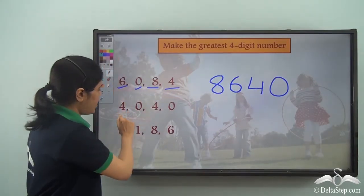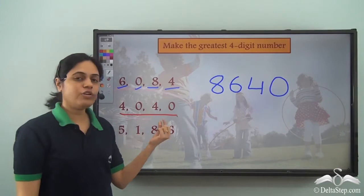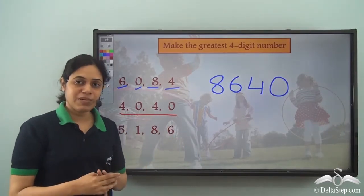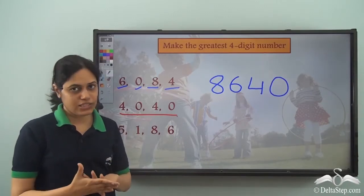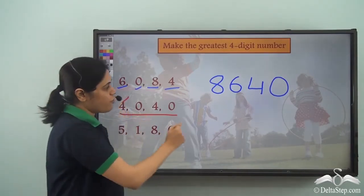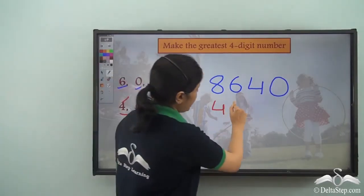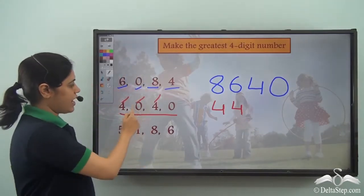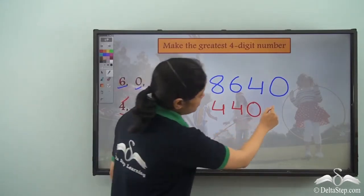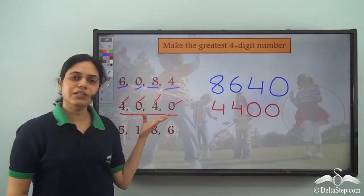Next, using digits 4, 0, 4, 0 — here 4 is written twice and 0 is written twice. Between 4 and 0, 4 is larger, so we write 4 first, then another 4, then 0, then 0. So 4400 is the largest four-digit number you can frame using these digits.